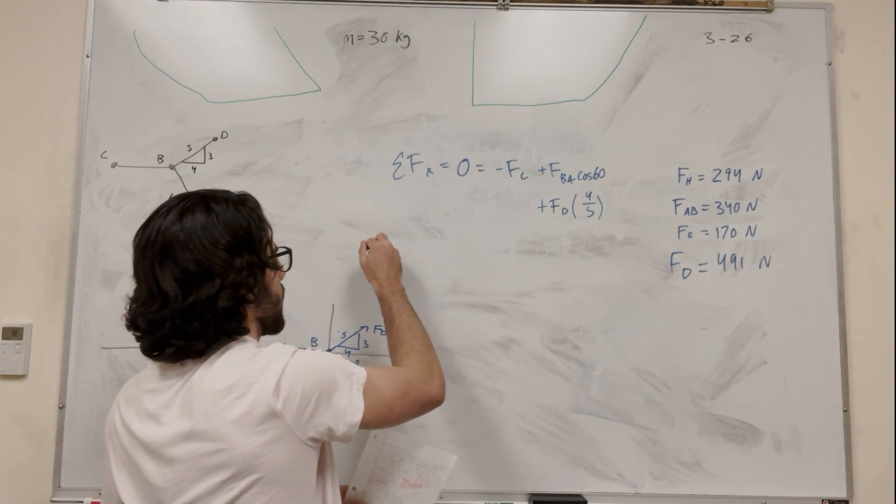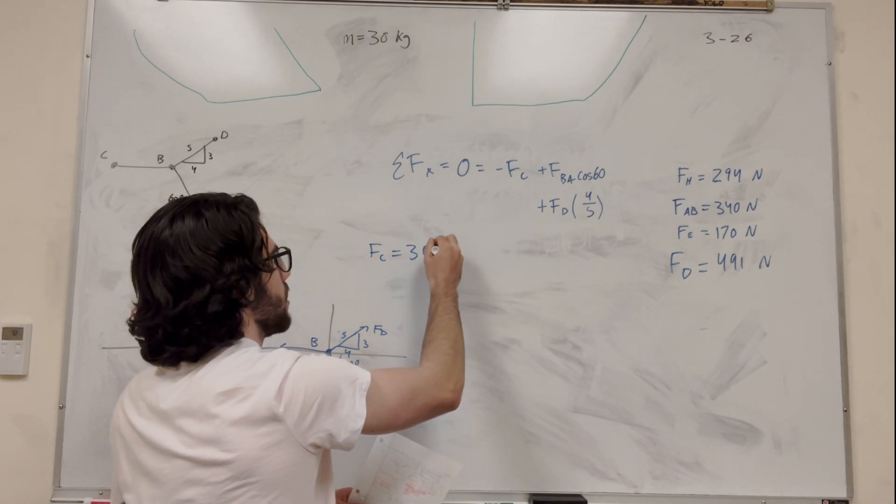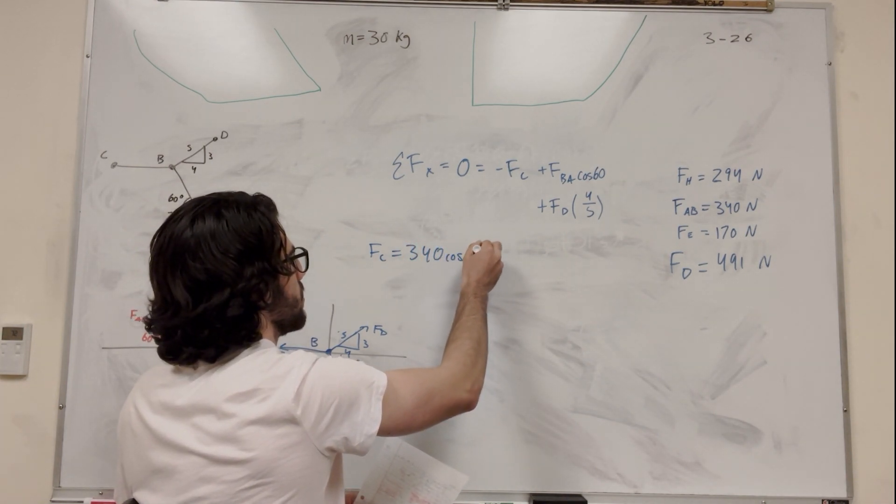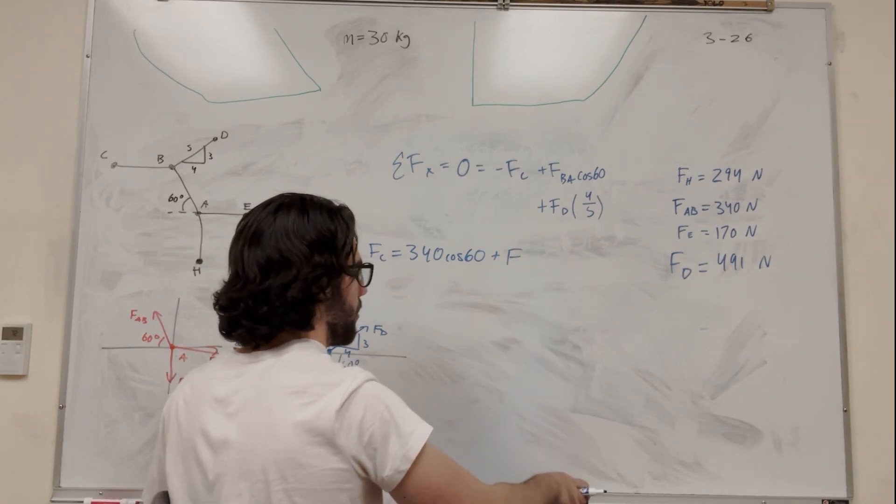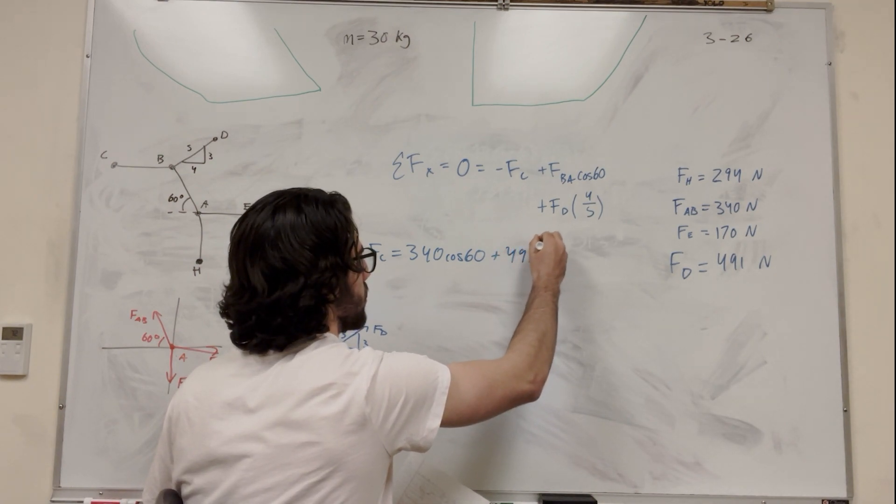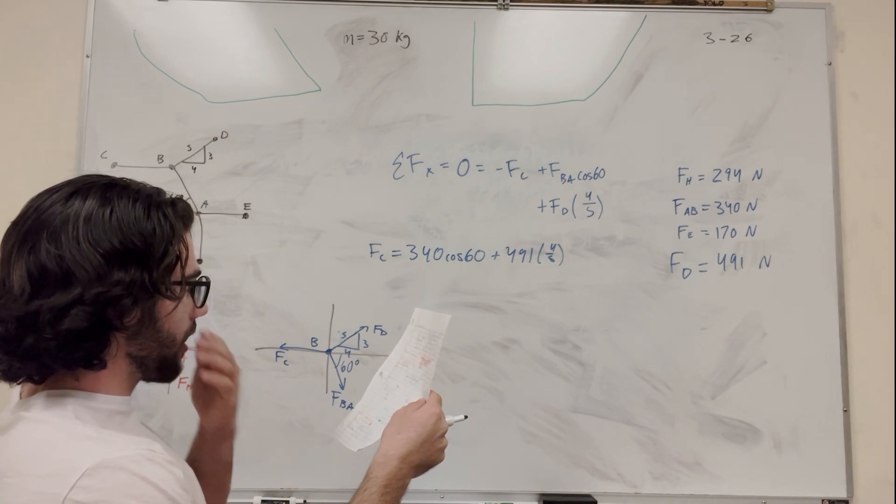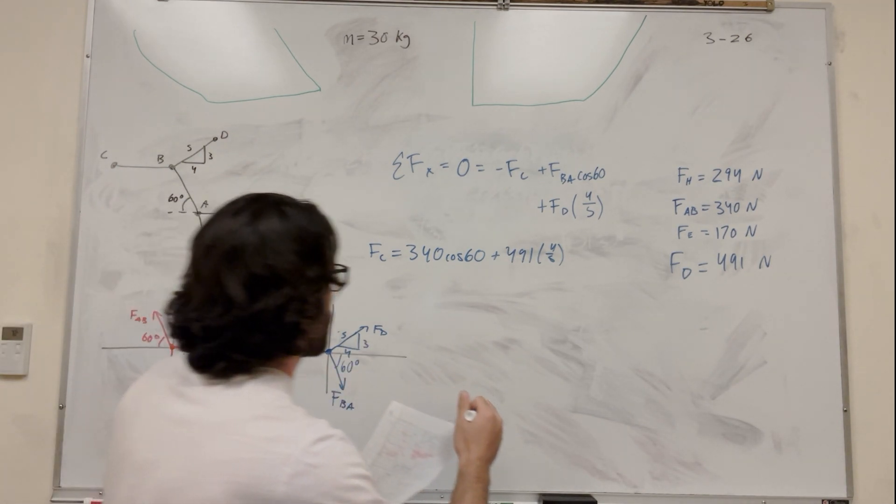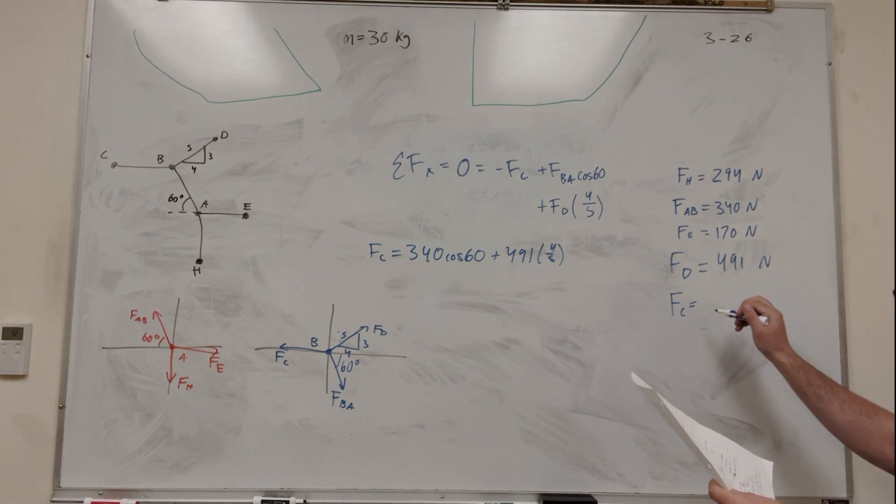So then if we move FC over, we'll get FC equal to FBA, as we found, 340 cosine of 60, plus FD, FD we found that, right? 491, 4 over 5. Make sure I did that right. I'm going to do that right. And then, of course, you're going to get FC now, is equal to 563, I hope. 563.